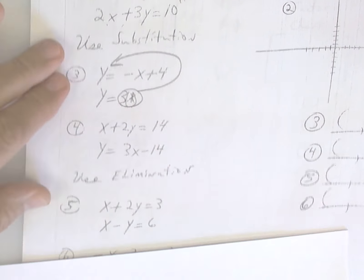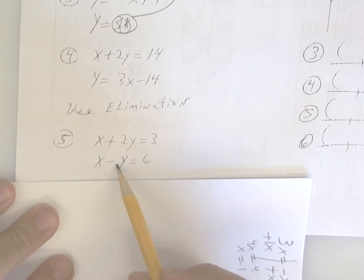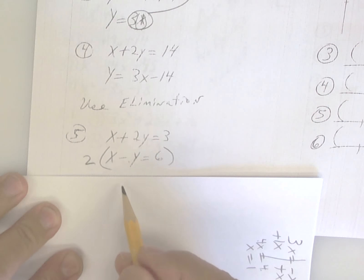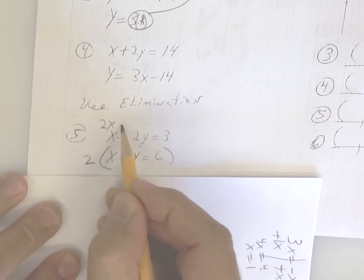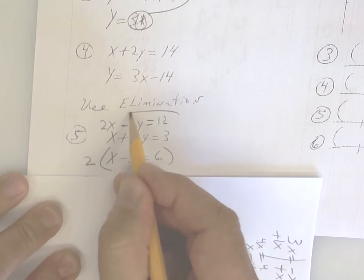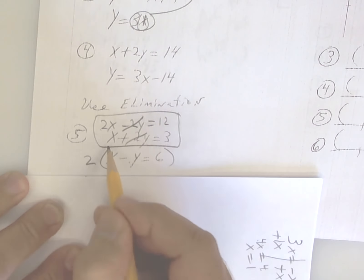The last one, or the last type, is elimination. You see how this is a plus and a minus? I would multiply this one by 2. So that's going to give me 2x minus 2y is equal to 12. So when I add these two up, the y's cancel. So I end up with 3x is equal to 15. And then x is equal to 5.